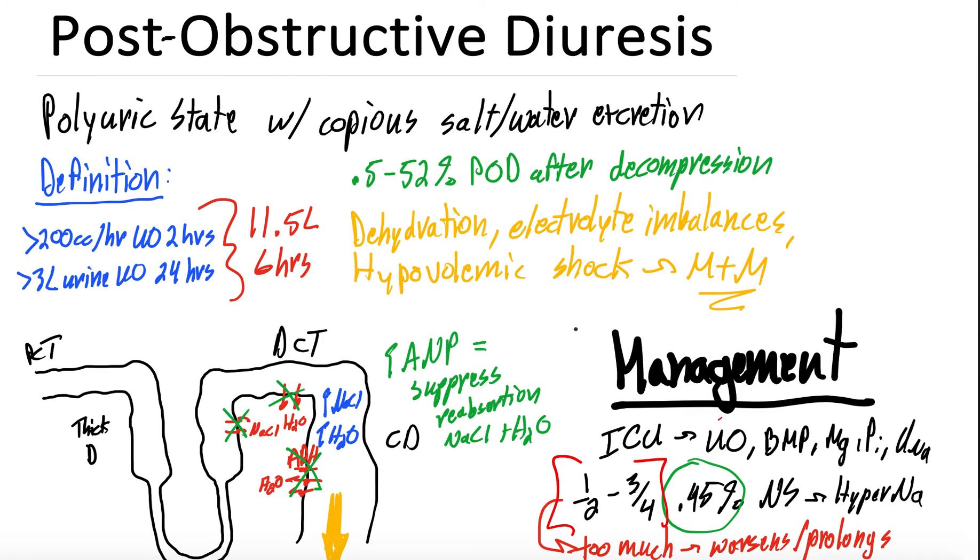Their renal function went from a BUN of 156 and a creatinine of 22 down to, I think their final BUN was maybe like 25 and their creatinine was 1.2 or something like that. So it had a really impressive recovery of renal function.